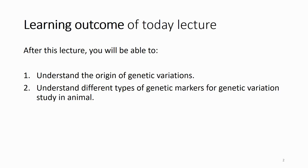After this lecture you should be able to understand the origin of genetic variation. There are many different parts of the genome that you can select for your DNA study. However, different types of genetic markers may have different characteristics, and different organisms might only provide certain markers suitable for studying genetic variation.